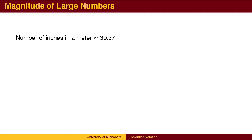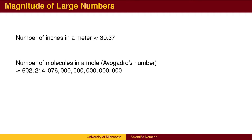Some numbers that we deal with are of a reasonable size. For example, there are approximately 39.37 inches in a meter. We generally have a good understanding of how large a number close to 40 is. Other numbers are far too large to have a good sense of their size. Avogadro's number counts the number of molecules in a mole of a particular substance. It is difficult to know what this number is called, and we don't want to have to write down all of these zeros. It would be good to have a shortcut.